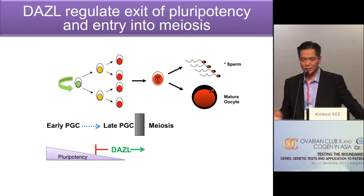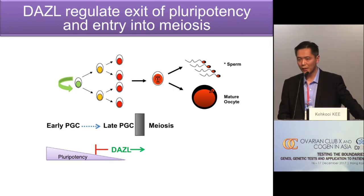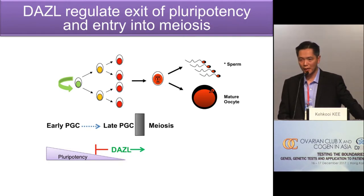Having all this data, we have a model that DAZL plays an important role during the transition from early PGC to late PGC, and then promoting them into meiosis — doing two jobs: one is shutting down the pluripotency program, and another is inducing the meiosis program.